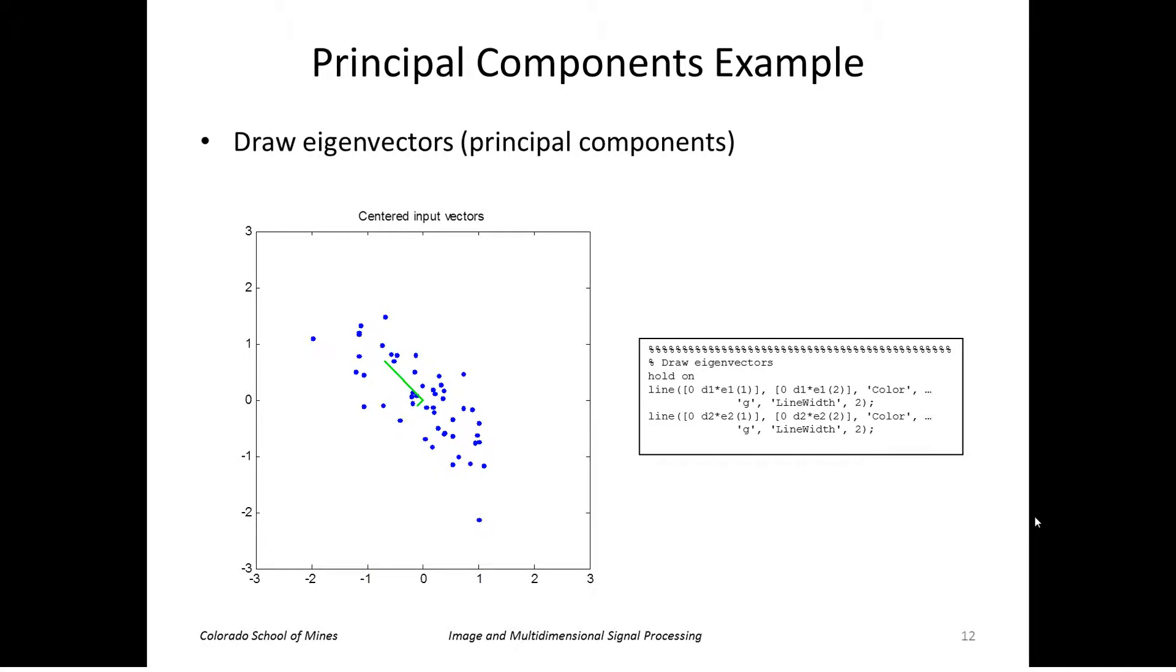Okay, let's see what those eigenvectors look like. If I plot those two eigenvectors in the original space coordinate system, those are two unit vectors. One of them points in this direction and one points in this direction. What I've drawn here is the eigenvector, which is just a unit vector multiplied by the corresponding eigenvalue.